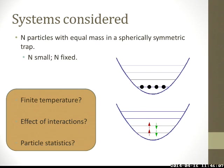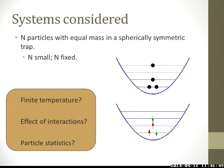The system we are going to consider is a harmonically trapped system, and there can be bosons and fermions. This is a finite-temperature picture, so a system can have excited states occupied for both bosons and fermions. The number of particles here is fixed and also very small. We want to ask what happens to the system if there are finite temperatures, if there is interaction between them, and if we introduce different particle statistics.